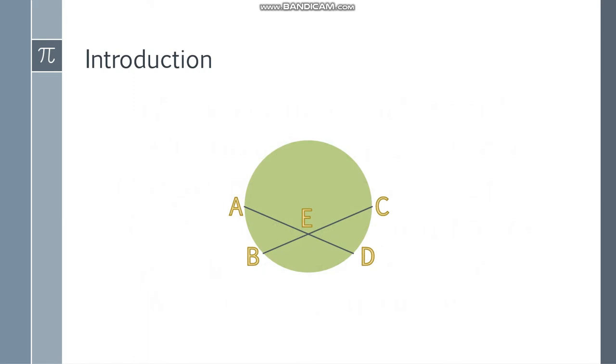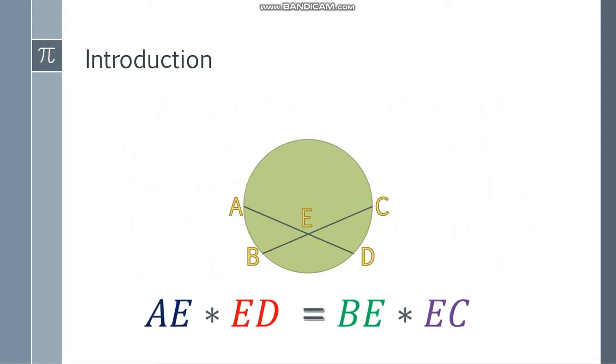So let's see the figure. We have two chords here, segment AD and segment BC. So let's check the formula. We have a proportion here. This segment, this part of the segment AE, if you multiply it to ED, the product of these two, AE and ED, is equal to the product of BE and EC.